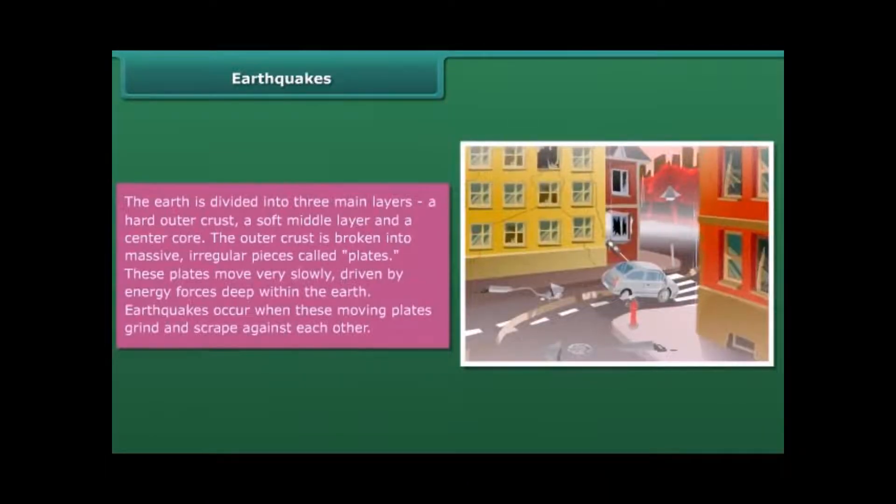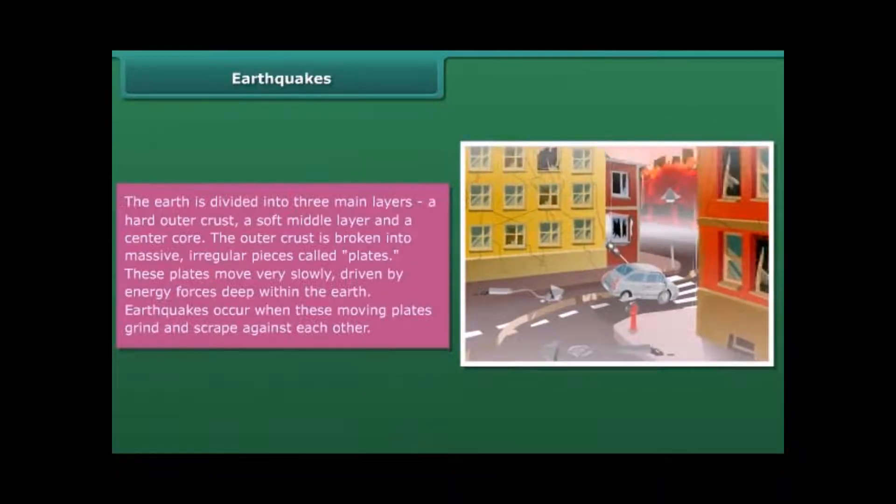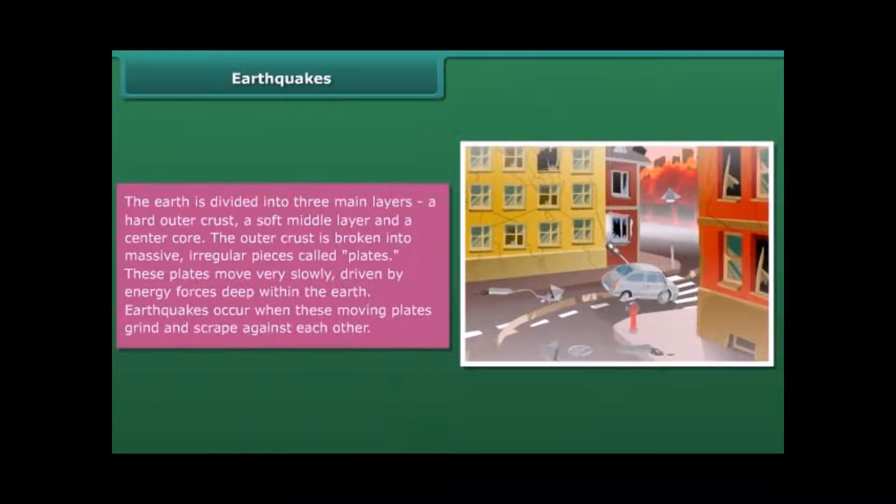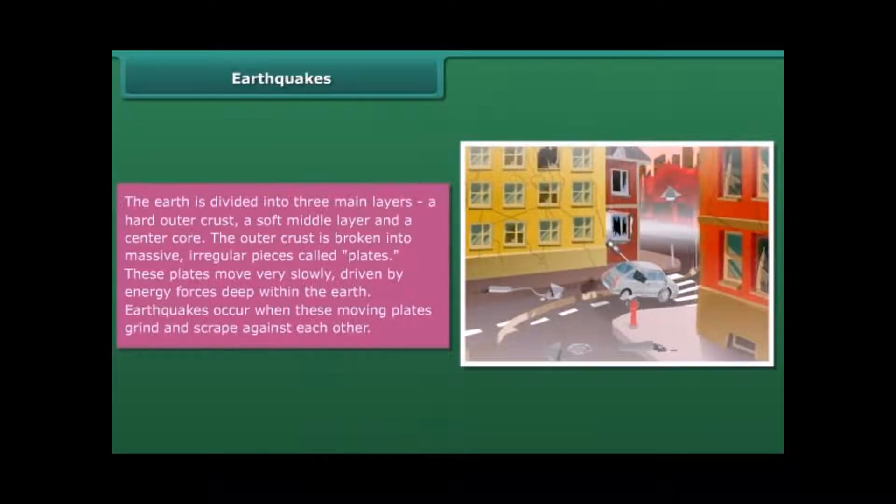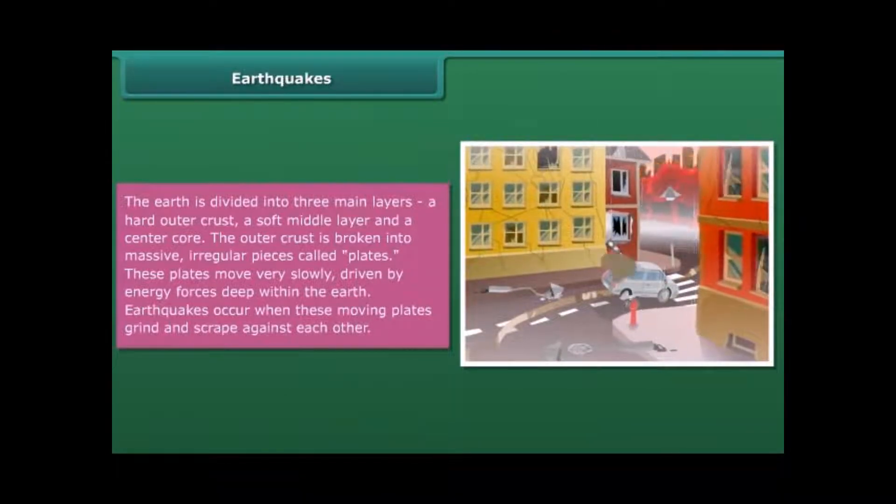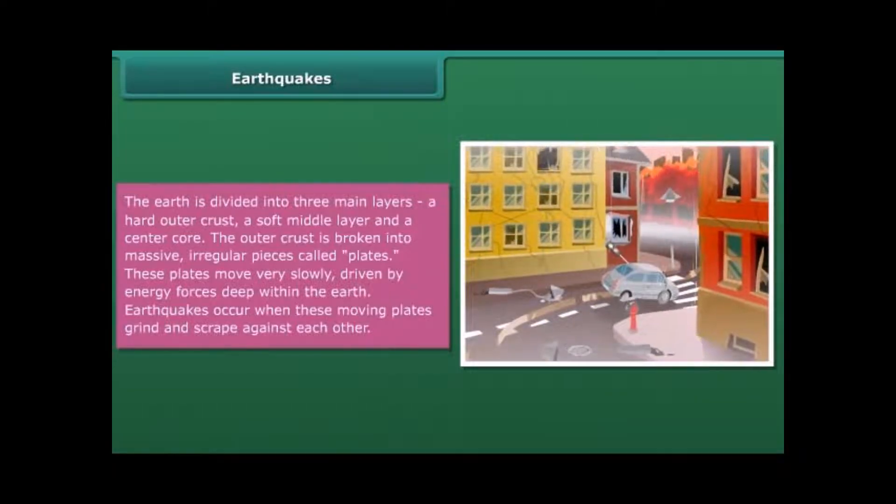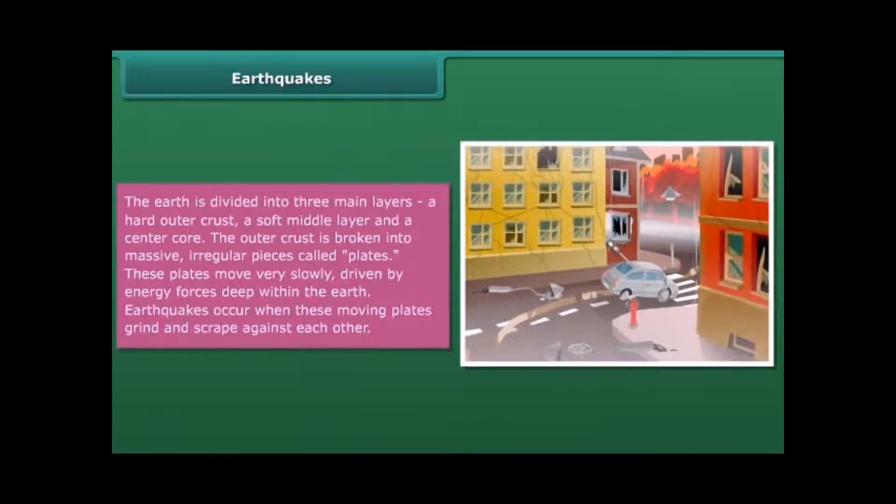The earth is divided into three main layers: a hard outer crust, a soft middle layer, and a center core. The outer crust is broken into massive irregular pieces called plates. These plates move over slowly, driven by energy forces deep within the earth. Earthquakes occur when these moving plates grind and scrape against each other.